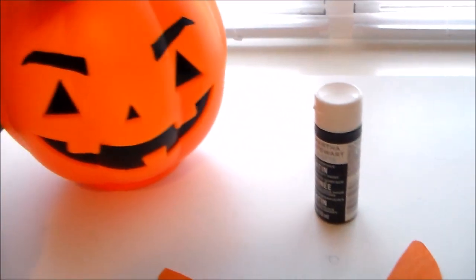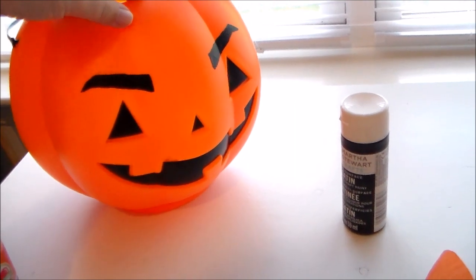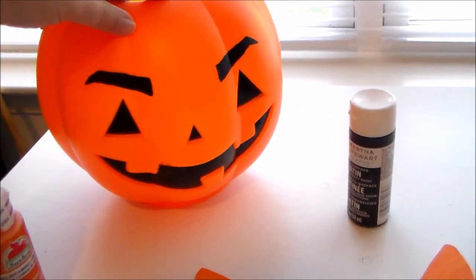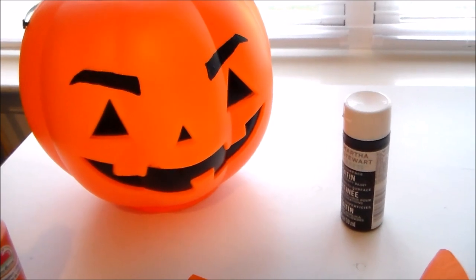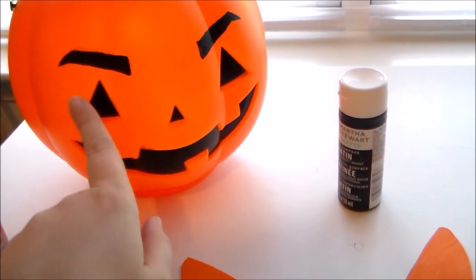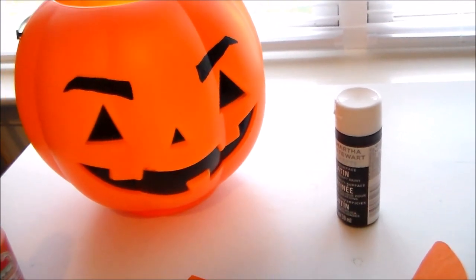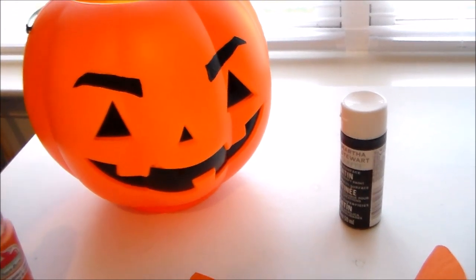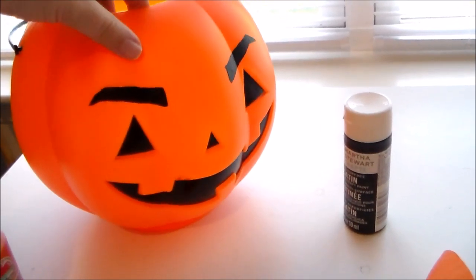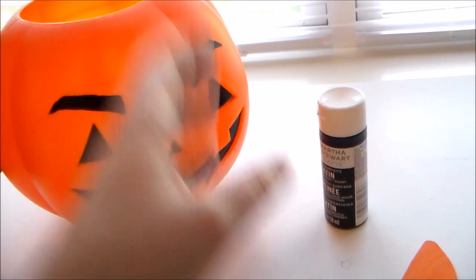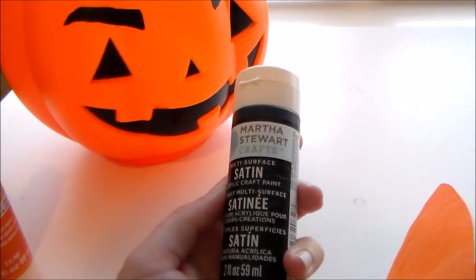Then while we're painting, we're going to take our pumpkin and paint on the eyebrows. The pumpkin that Deku has has more circular eyes, so it looks a little bit more All Might-ish, but since this one has the triangle eyes, we're just going to do the best we can and paint on the eyebrows using some multi-purpose paint.